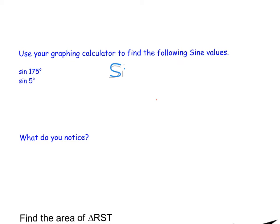It wants us to look at the sine of 175 and the sine of 5. I just type those into my calculator. For the sine of 175, I get 0.09. Now I type in the sine of 5, and I get the exact same answer. I get 0.09.